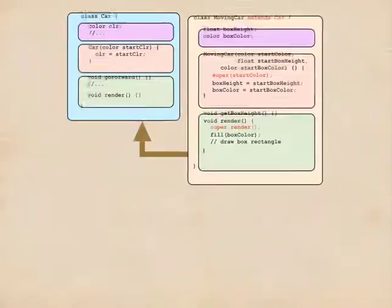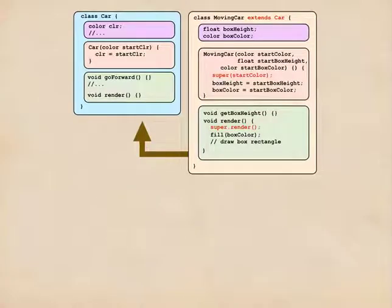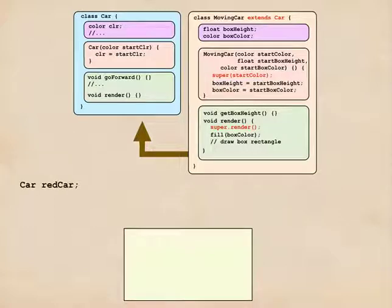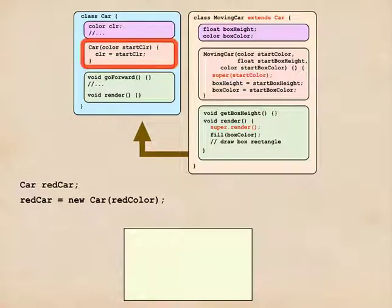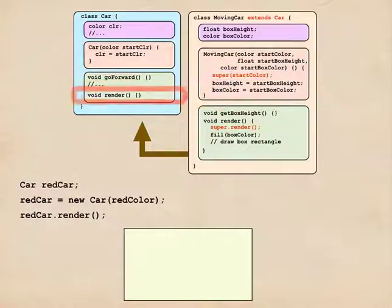Let's see all of this in action. Here's our car class on the left and the moving car class on the right. I'll start by declaring a variable red car of type car, so it's a garden variety car. I'll construct it by calling the car constructor and handing it a red color. This calls the constructor and it returns a red car to me. I can then call render and the car's render procedure runs and draws me a red car.